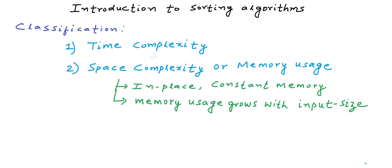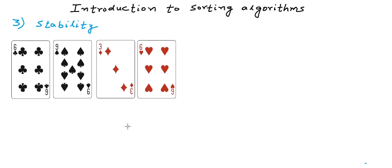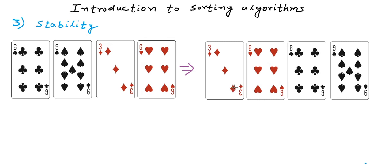The third parameter that we talk about is stability and this one will take some explanation. Suppose we have a set of cards like this and we want to sort these cards in increasing order of rank. We have one three of diamond, we have one nine of spade and we have two sixes, one of club and another of heart. One possible permutation will be this. The cards are sorted by rank, we have got three, six, six, nine. But if you see in the original list, six of club was coming earlier than six of heart.